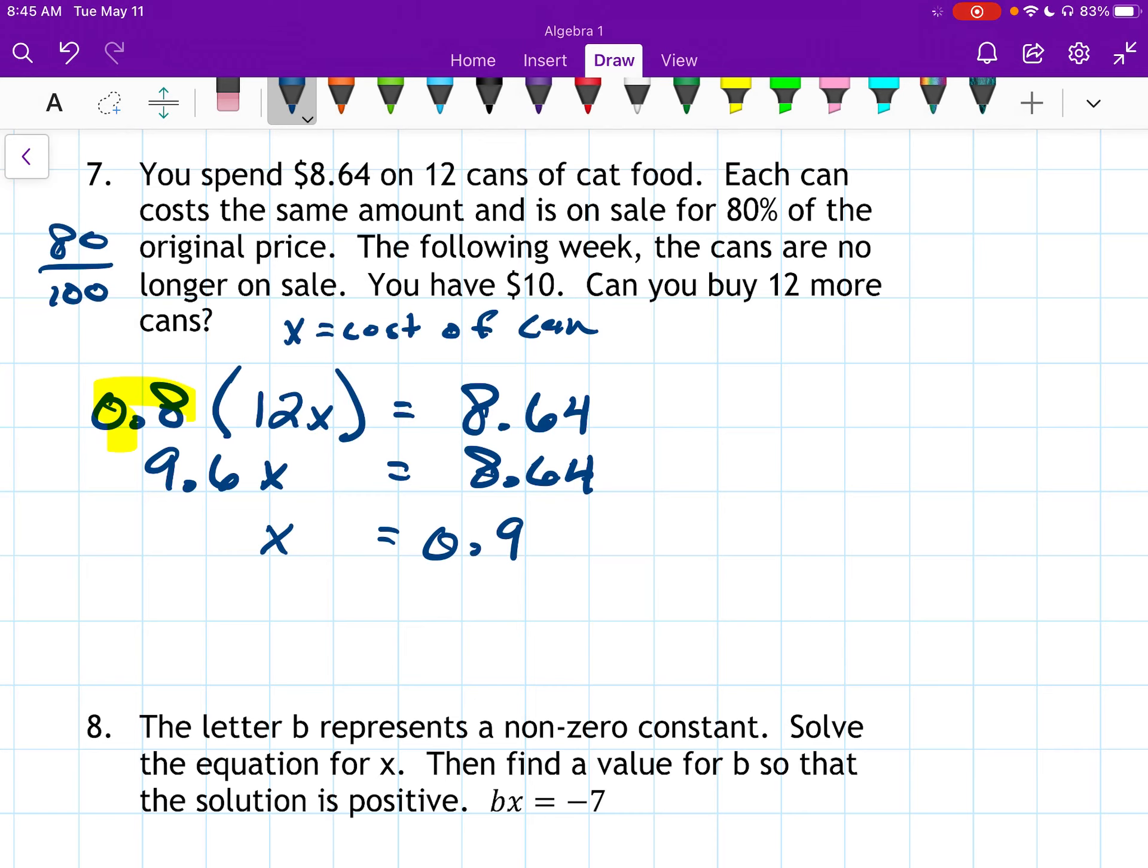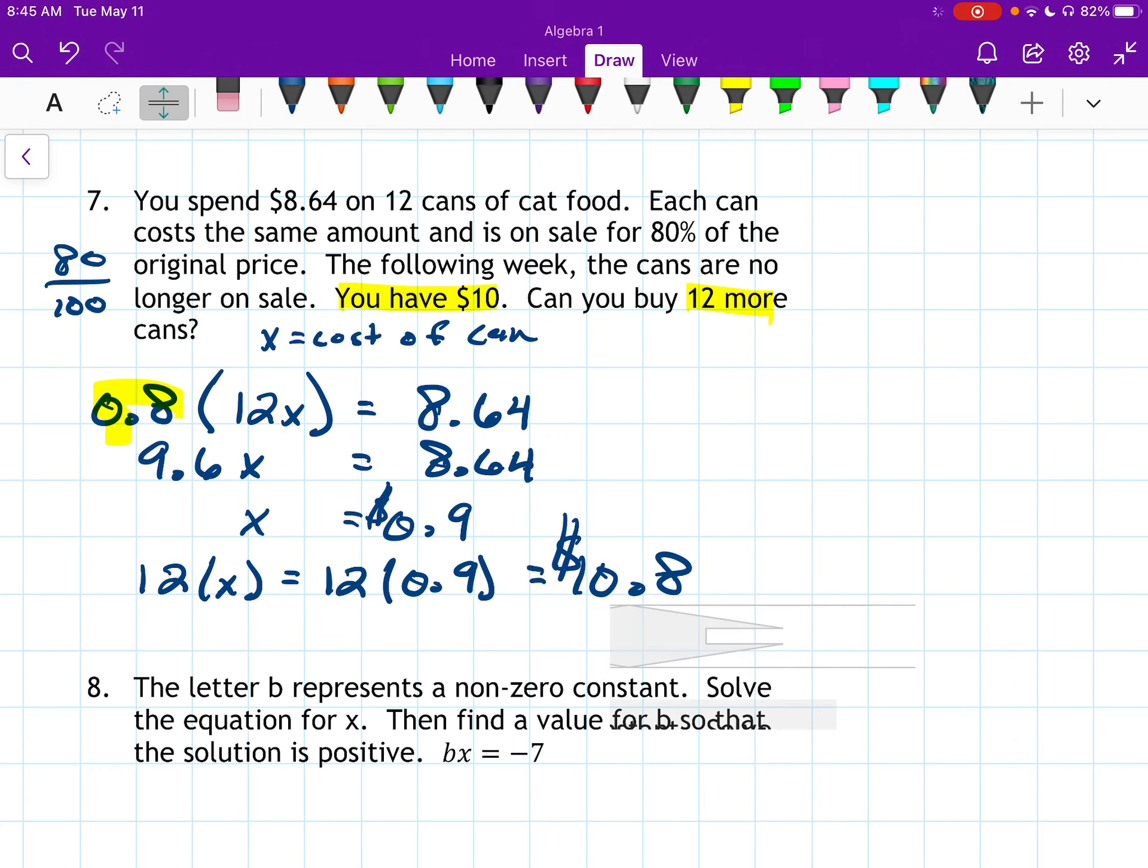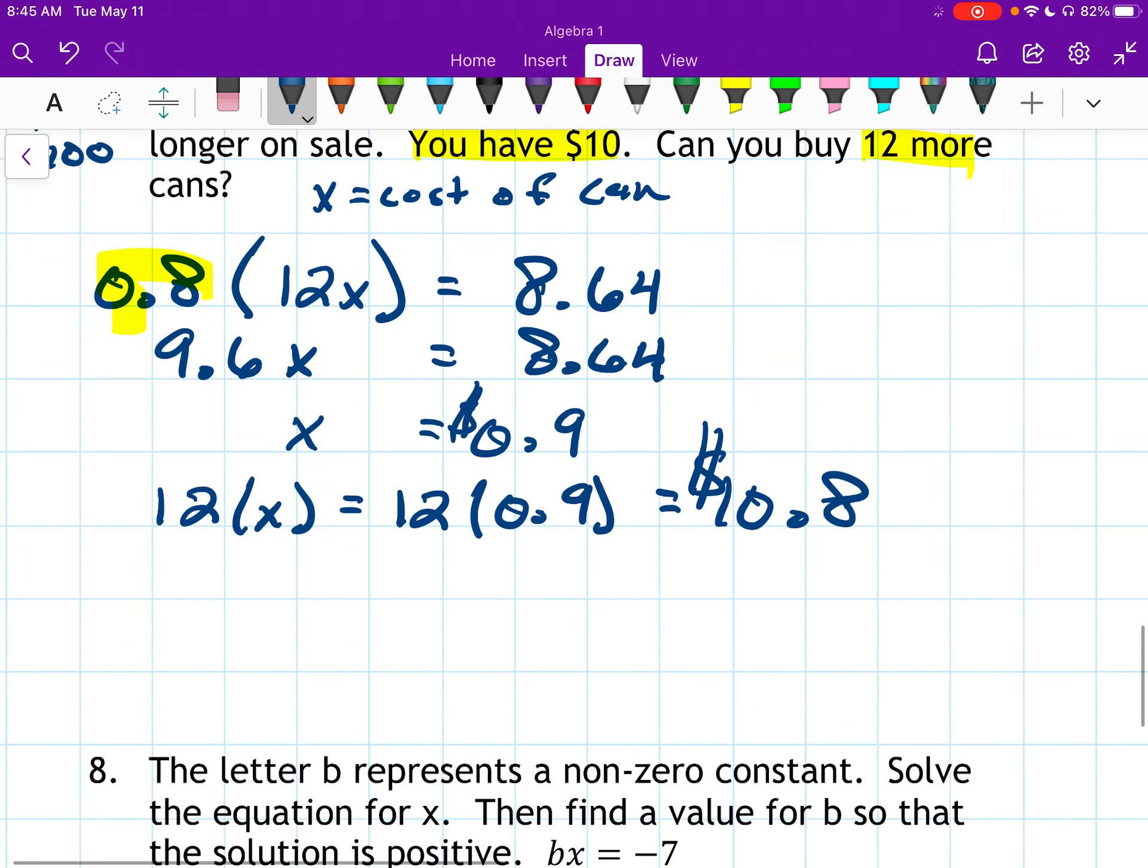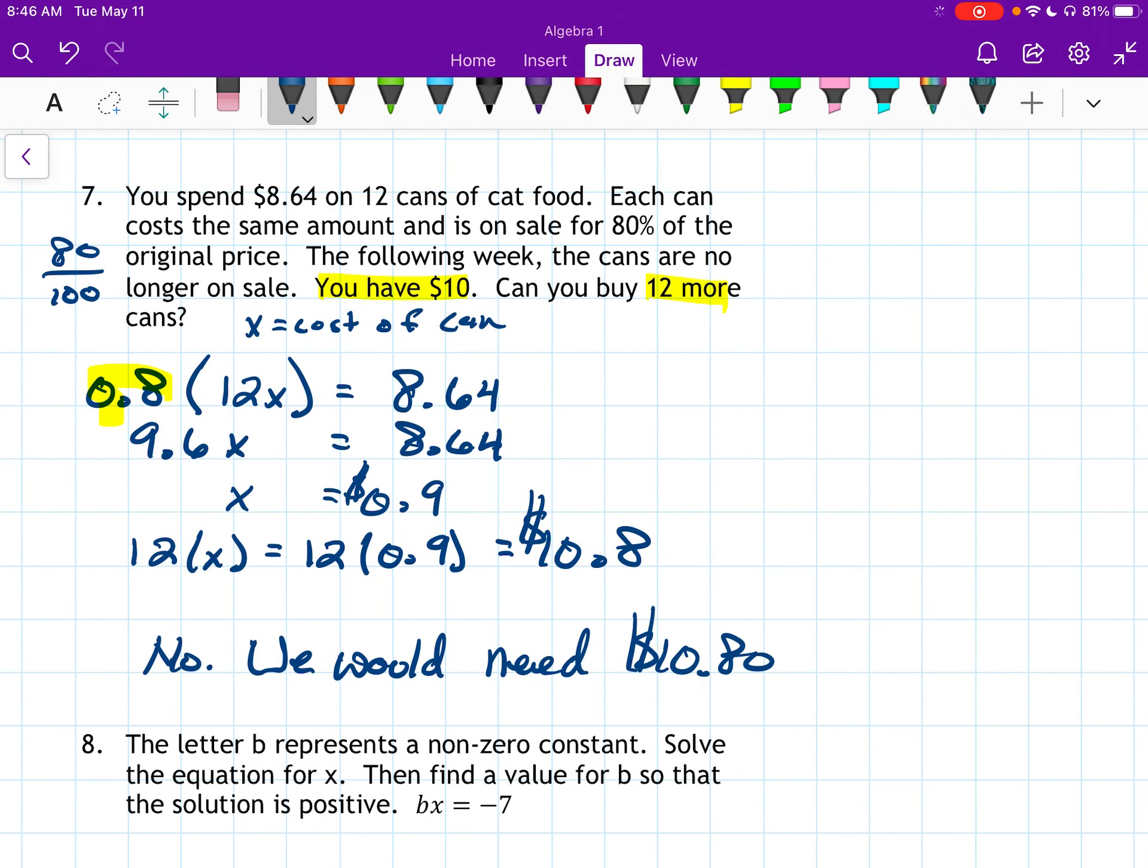So that is the cost of one can of cat food. So that's 90 cents. Now we want to know, with $10, can we buy 12 cans? So I'm going to say, well, 12 times x is going to be 12 times 0.9, which is 10.8. So $10.80. So now we look at that and we're like, well, that is a larger amount than $10. So no, we cannot buy 12 cans. So no, we would need $10.80. Some of your book problems are going to be kind of like this, where it's not asking for like an x equals answer. It's asking for a longer process, more thinking in it.